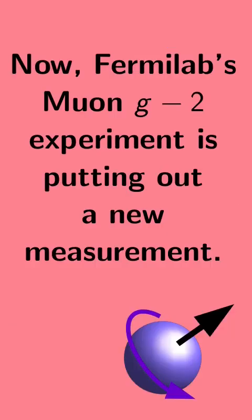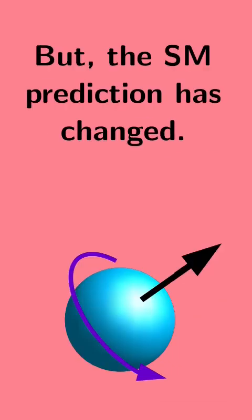Now, Fermilab's muon g-2 experiment is putting out a new measurement, their final result in fact. But the standard model prediction has changed. Why?